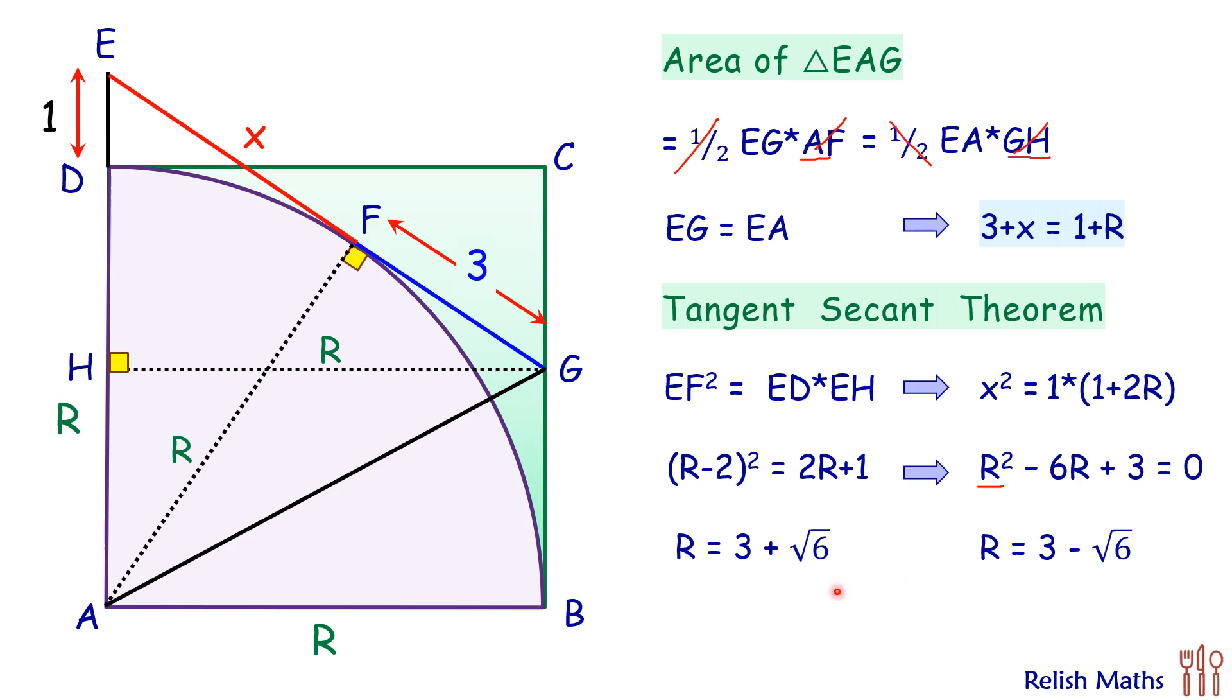So this second value of R we'll have to cancel it out, and thus our answer is R, the radius of the quadrant, is 3 + √6 centimeters. And that's our answer. If you really enjoyed the solution, please press the like button, and for more such interesting videos do subscribe the channel.